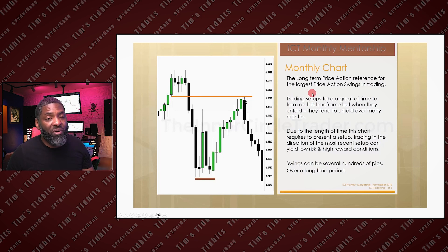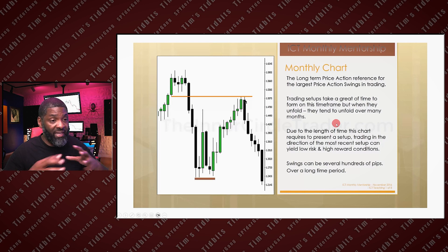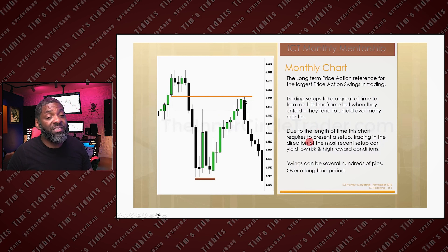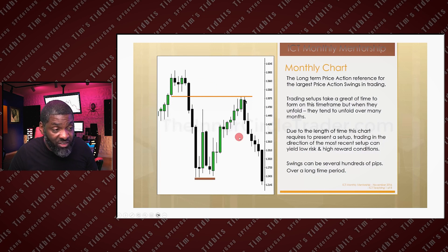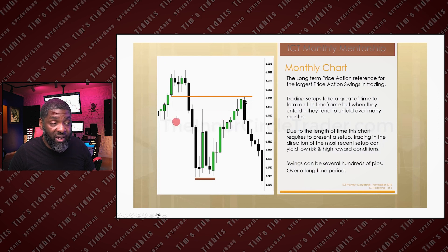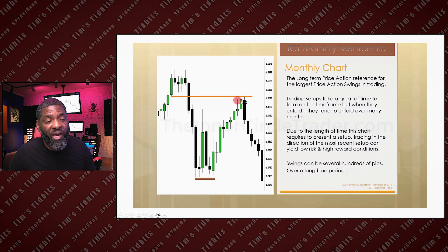The monthly chart is the long-term price action reference for the largest price swings in trading. Trading setups take a great amount of time to form on this timeframe, but when they unfold, they tend to unfold over months. Due to the length of time this chart requires to present a setup, trading in the direction of the most recent setup can yield low risk, high reward conditions. Swings can be several hundred pips over a long time. Just looking at this one trade — one, two, three, four, five, six, seven, eight, nine, ten, eleven, twelve candles — it's over a year before you even get back to the place where you're going to sell. It takes a long time on monthly charts.